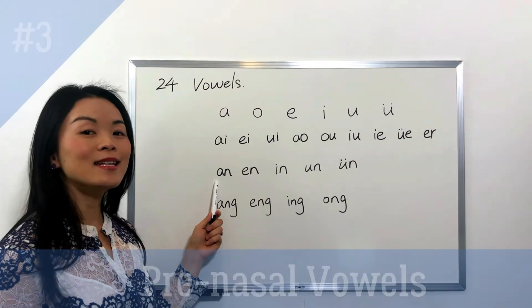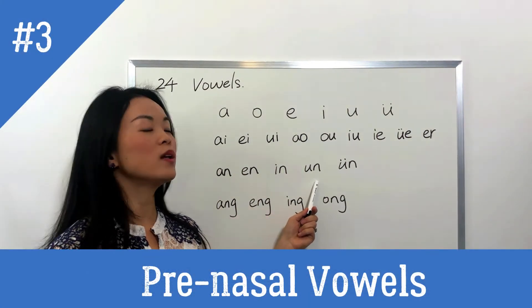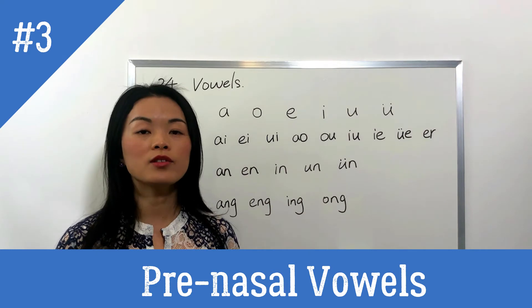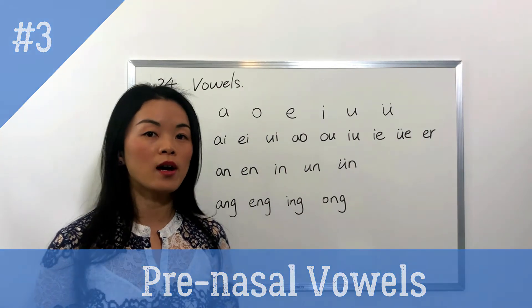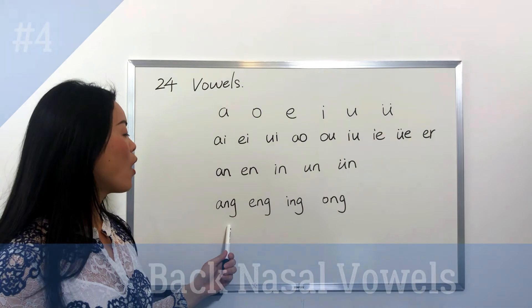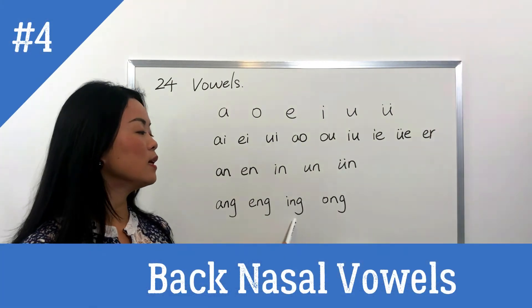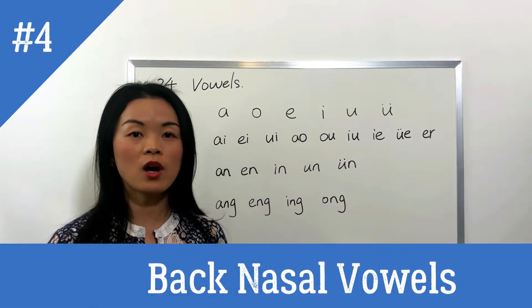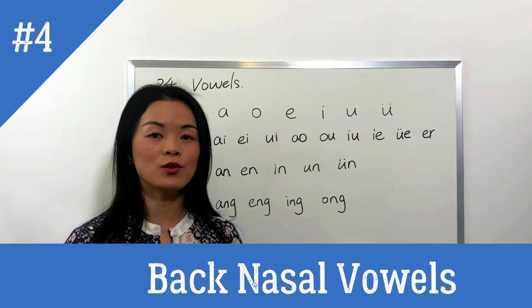An, En, Yin, Wen, Yin — these are the pre-nasal vowels. Ong, En, Yin, Ong — these are the back nasal vowels.